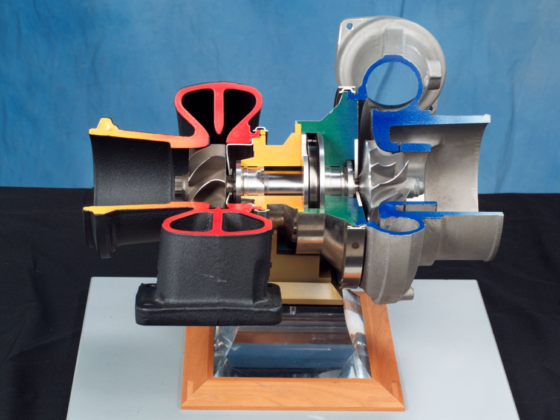Turbocharger lag is the time required to change power output in response to a throttle change, noticed as a hesitation or slowed throttle response when accelerating as compared to a naturally aspirated engine. This is due to the time needed for the exhaust system and turbocharger to generate the required boost, which can also be referred to as spooling. Inertia, friction, and compressor load are the primary contributors to turbocharger lag.